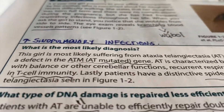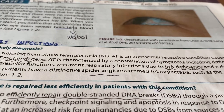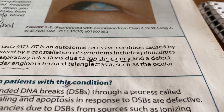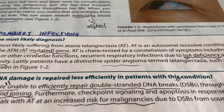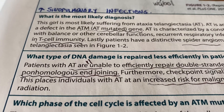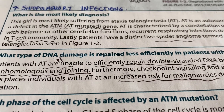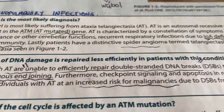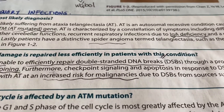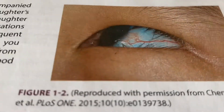They mention other things that can come out in other questions. We're not going to go over that just now, but we can say this patient has respiratory tract infections because there is IgA deficiency. And just remember the IgA deficiency in T-cell immunity. The patient has dilated spider angioma — the term telangiectasia — in the eye, and here's the picture.